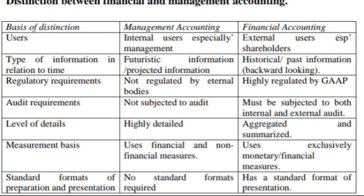Another basis of distinction is the level of details. Management accounting is highly detailed. Financial accounting is aggregated and summarized — just a summary. The whole information of an entity can be summarized in the balance sheet and the statement of profit or loss.